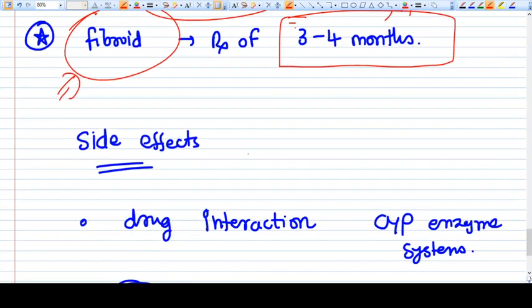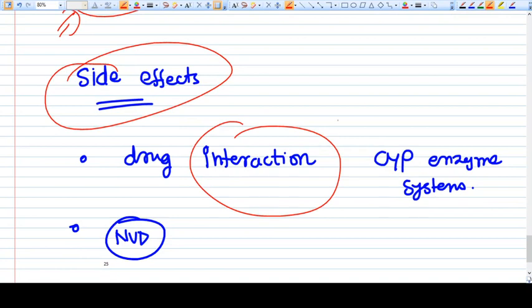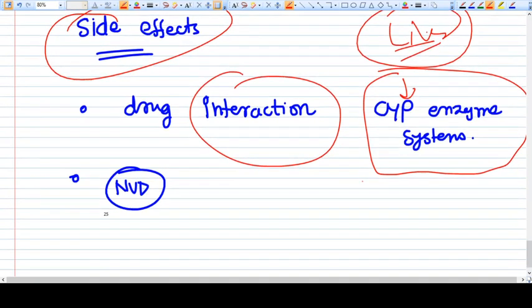The side effects of ulipristal acetate include drug interactions. It also utilizes the CYP enzyme systems of the liver. So once this enzyme system is involved with any drug metabolism, there is a precaution you should take.